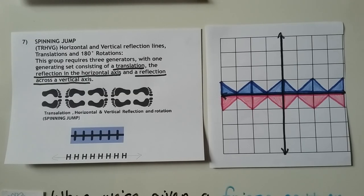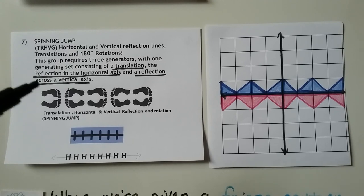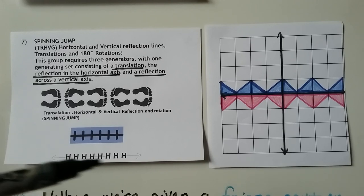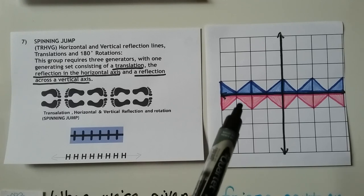Our seventh category of freeze patterns is a spinning jump. We have horizontal and vertical reflection lines, translations, and 180-degree rotations. This group requires three generators: a translation, a reflection in the horizontal axis, and a reflection across a vertical axis. We have a reflection here and a reflection here. It would be a pattern like this, or if we had the letter H with the line of reflection going right through the center of the letter, it would be like this.